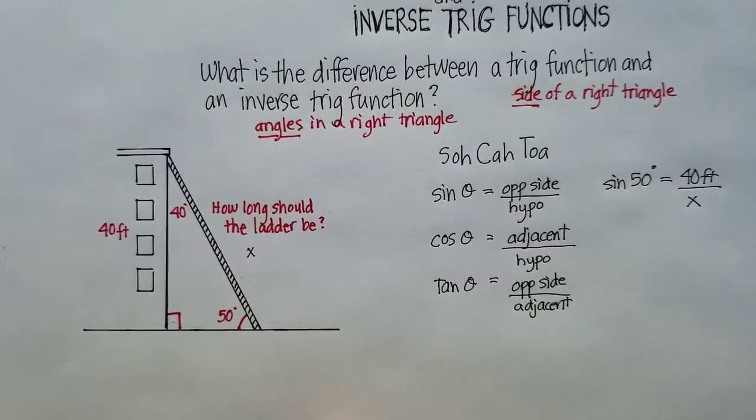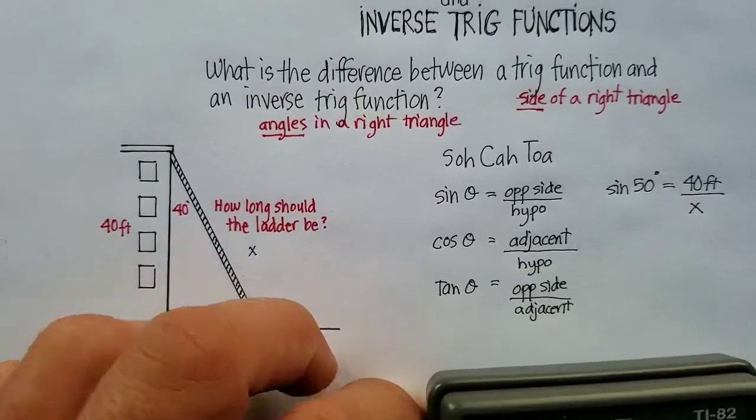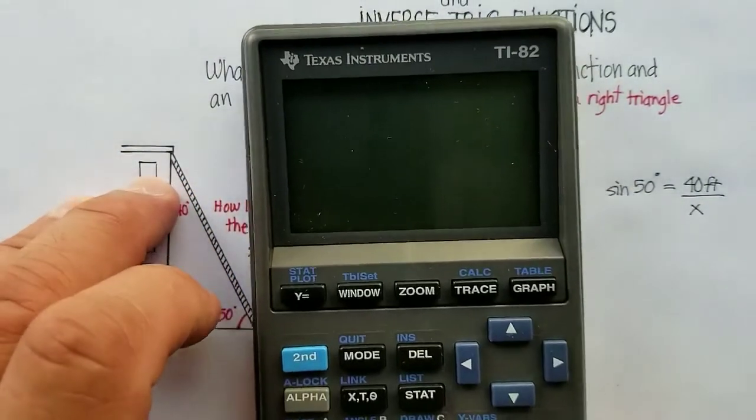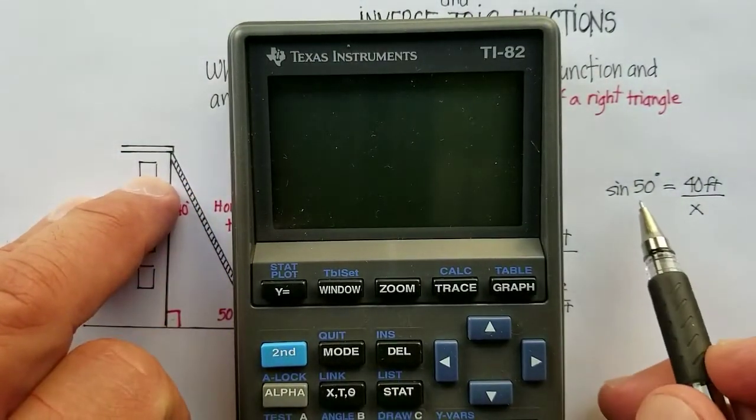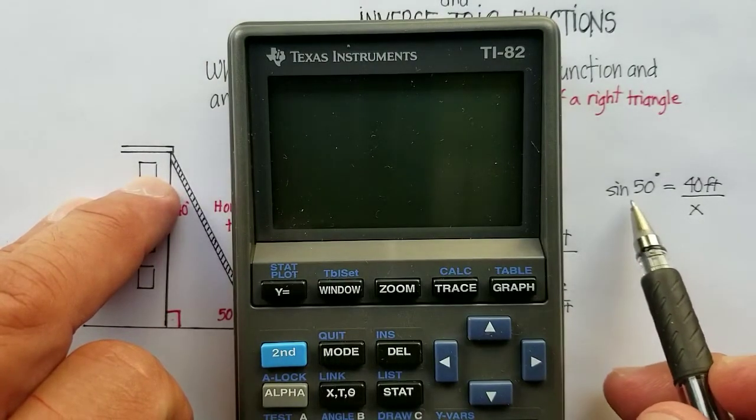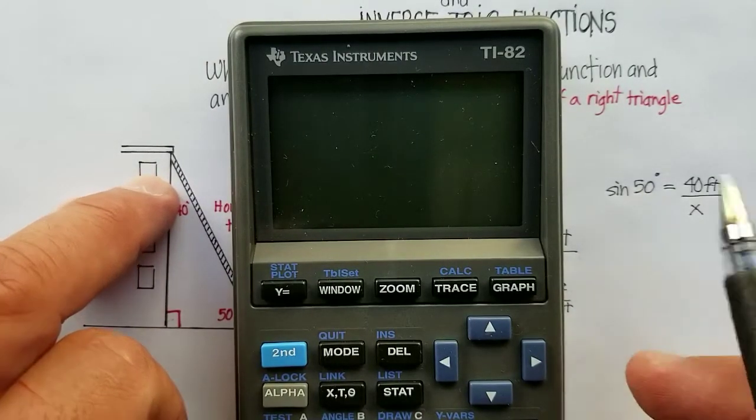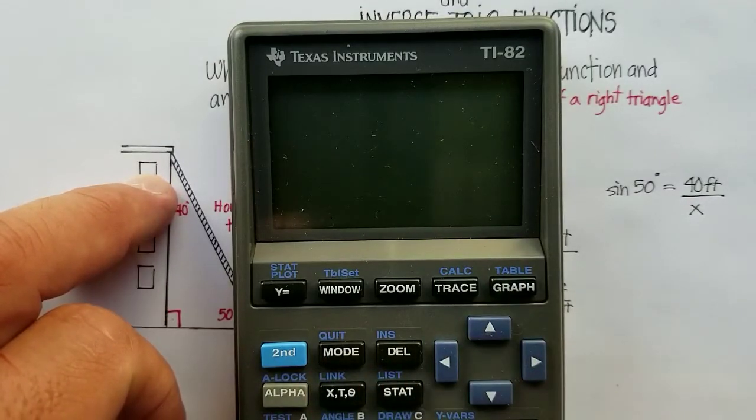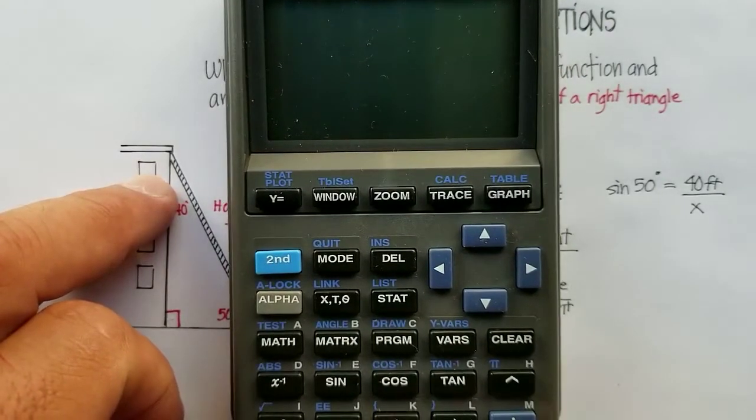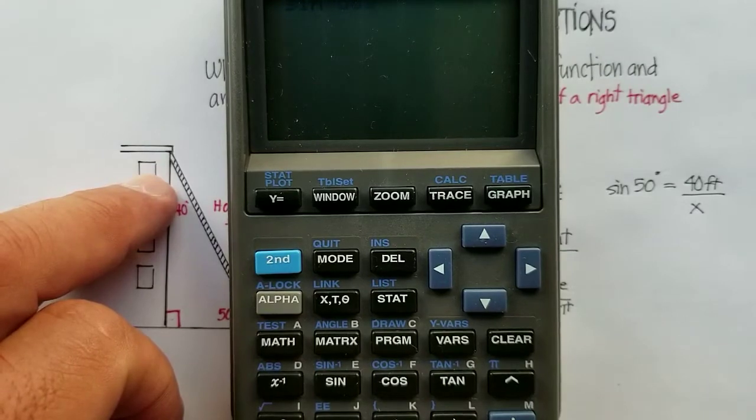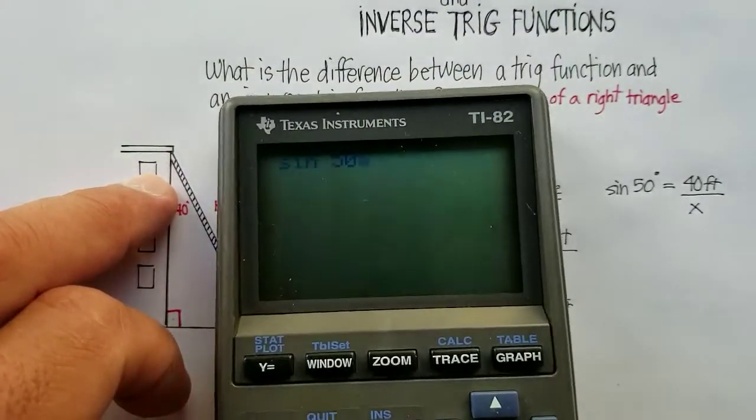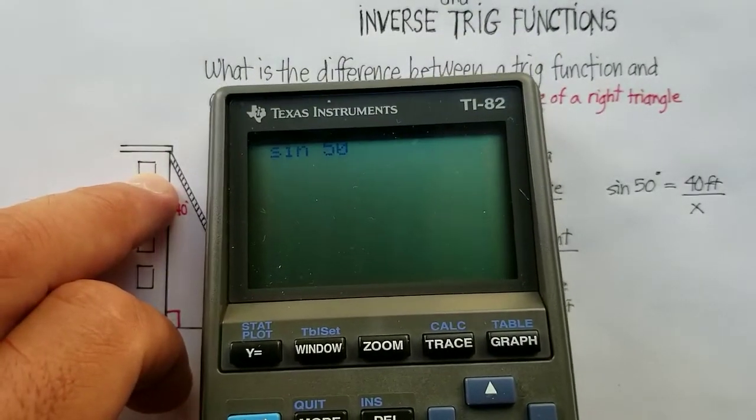Now the first thing we have to do is figure out what is the sine of 50 degrees. Because remember, trigonometry are, we know what these ratios are. So we can actually go to, let's turn this on. We can go to this little button here that says sine. And we can say the sine of 50. And there we go. Sine of 50.